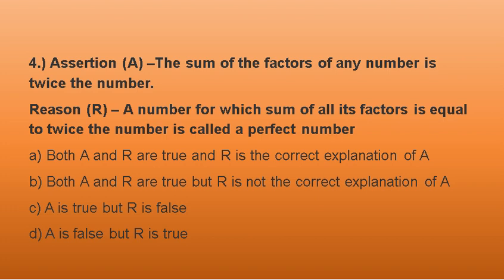Assertion is here. The sum of the factors of any number is twice the number. So we can take any number. Suppose I have taken 6. So the factors of 6 are 1, 2, 3 and 6 itself. You add 1 plus 2 plus 3 plus 6. That equals 12. Yes, the sum of the factors of any number is twice the number.